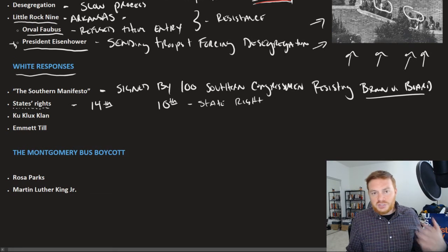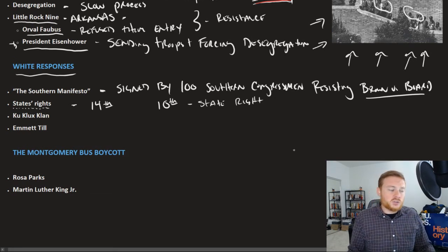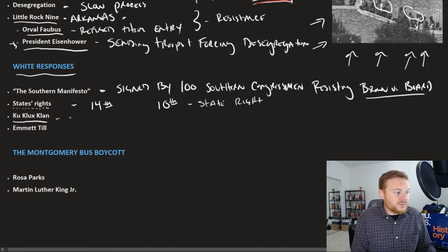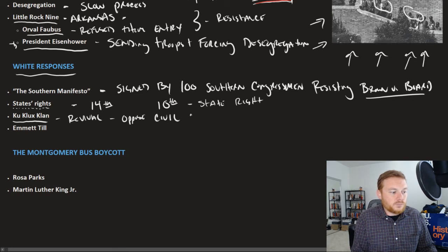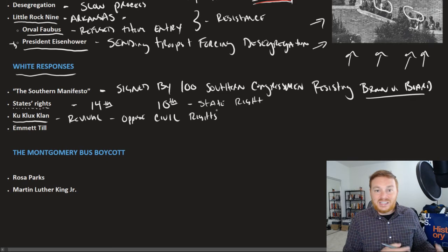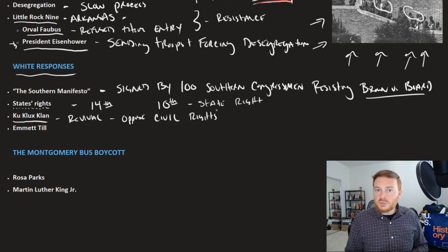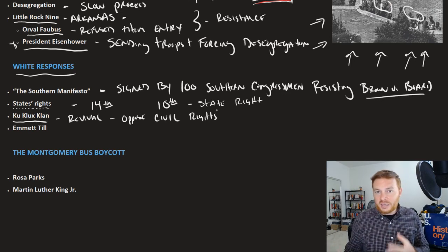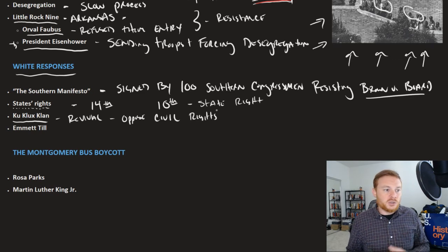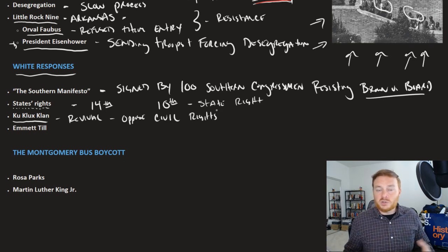The slow and steady process toward desegregation also led to a revival of the Ku Klux Klan, which once again had a purpose — this time to oppose civil rights. The Klan had been very popular in the 1920s, when it was also opposed to immigration, and was anti-Catholic and anti-Jewish. The Great Depression had largely put the Klan out of business, but it came back in the 1950s and 1960s specifically to oppose civil rights.